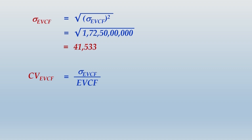Coefficient of variation for project A = sigma EVCF divided by EVCF = 41,533 divided by 2,05,000. In order to obtain the cash flow of 2,05,000, there is risk of 41,533 in the form of standard deviation. So for each rupee of EVCF, the standard deviation — the CV — will be 0.2026.